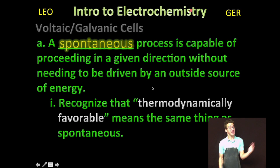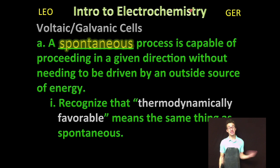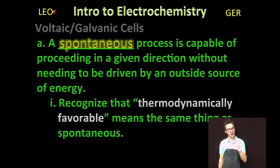When we talk about spontaneous processes, we're talking about things capable of proceeding in a given direction without needing to be driven by an outside source of energy. On the AP chemistry test, know that when you're thinking spontaneous, you should write thermodynamically favorable. It means the same thing as spontaneous, and we'll talk more about that term as the year goes on.